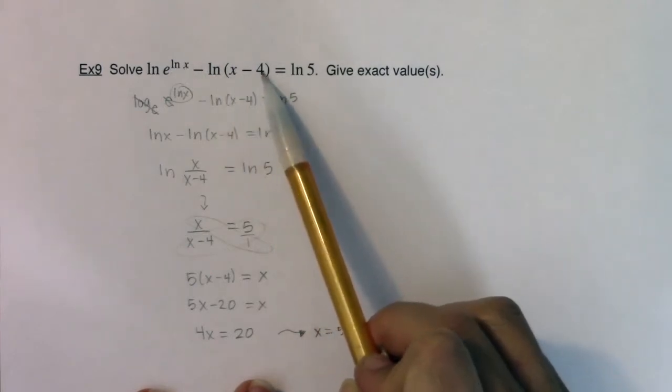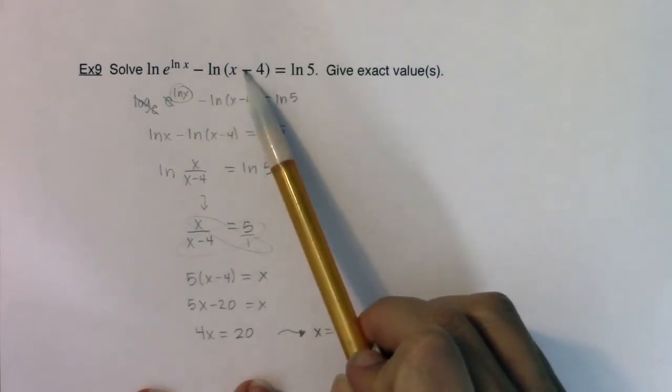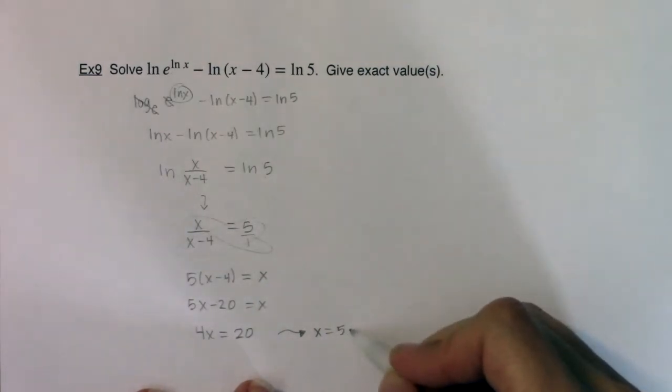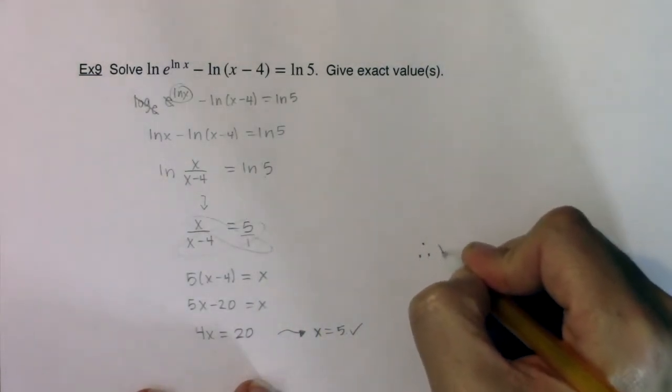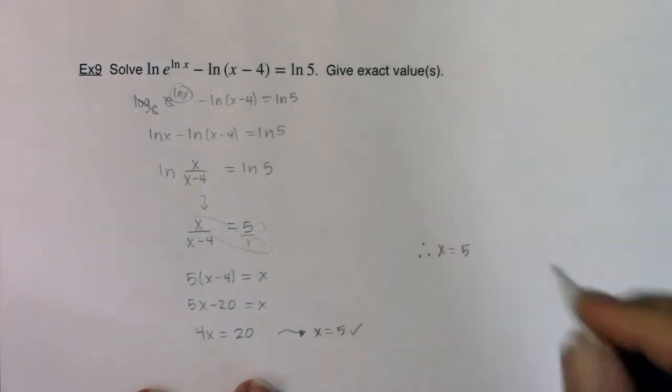If I plug 5 into this argument, 5 minus 4, it's still positive, great. And this is a constant and it's positive. So this is a legit answer. So my one answer coming out of here is that x is equal to 5.